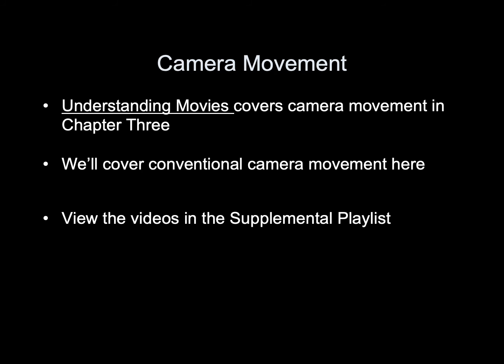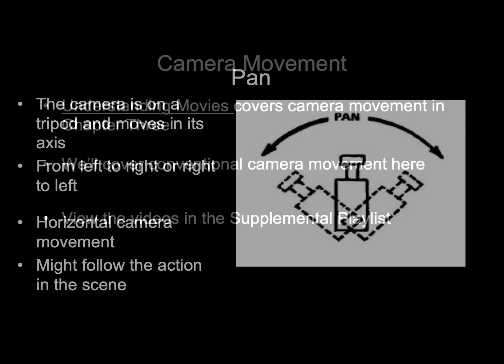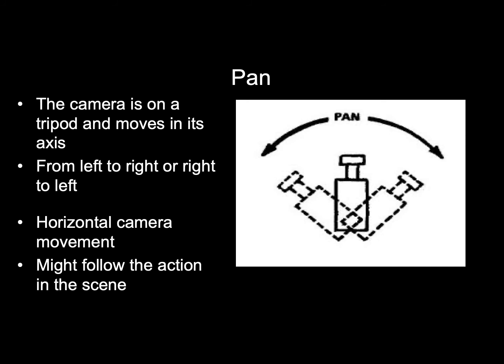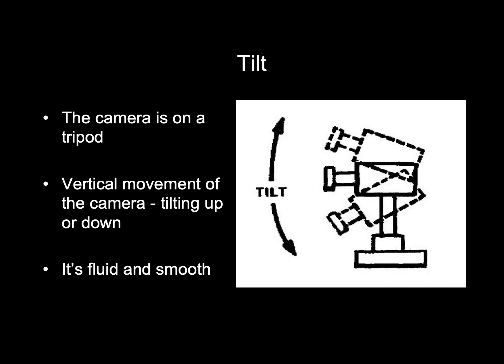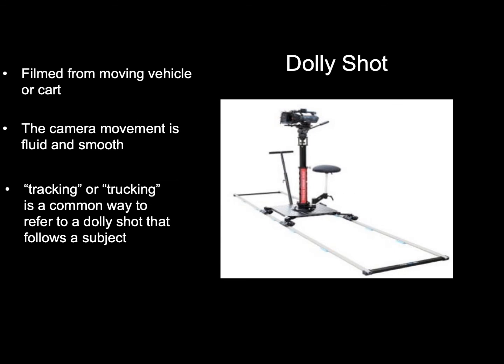Camera movement. Understanding Movies covers camera movement in Chapter 3. We'll cover conventional camera movements here. View the videos in the supplemental playlist. Pan: the camera is on a tripod and moves on its axis from left to right or right to left — a horizontal camera movement that might follow the action in a scene. Tilt: the camera is on a tripod with a vertical movement tilting up or down — fluid and smooth.